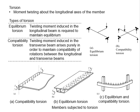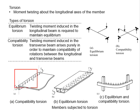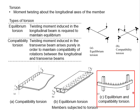More precisely, compatibility torsions involve interactions between the longitudinal and transverse beams. These are some examples of members subjected to torsional load. This first example refers to compatibility torsions — the beam is subjected to torsional load, but the adjacent member can act as a transverse member to help share the torsion. This second example refers to equilibrium torsions — this member is standalone, and when subjected to unbalanced vertical load, the member itself must withstand all of the torsional load.